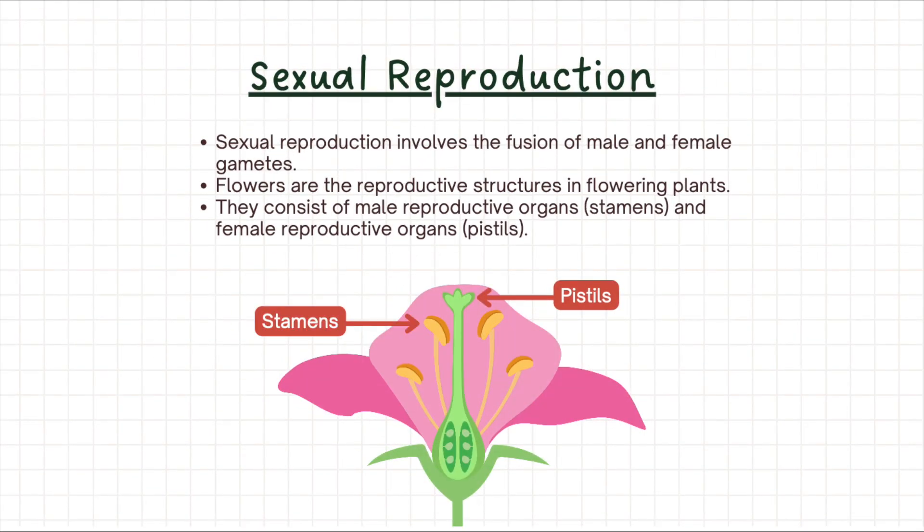Sexual reproduction in plants involves the fusion of male and female gametes. Flowers — those magnificent structures — serve as the reproductive organs in flowering plants. Within these flowers, we find the stamens, the male reproductive organs, and the pistils, the female reproductive organs.